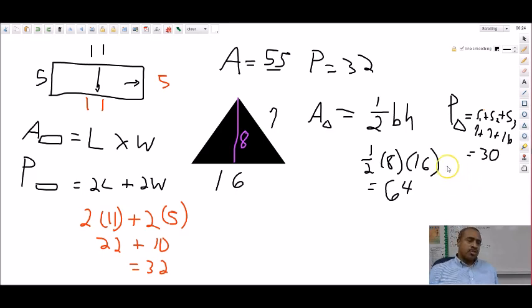So sometimes they'll ask you about the area of a triangle, sometimes they'll ask you about the perimeter of a triangle. Then the other comment is the circle.